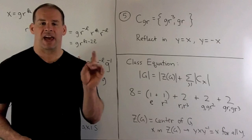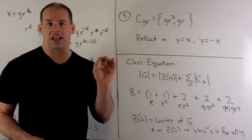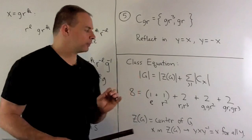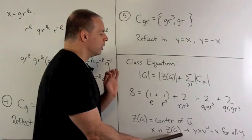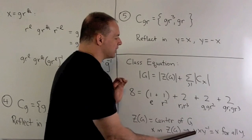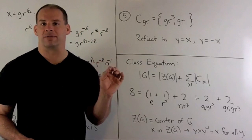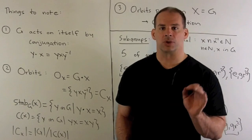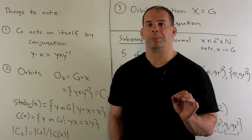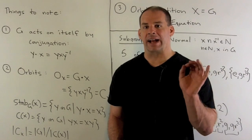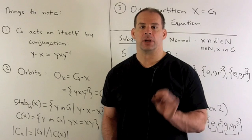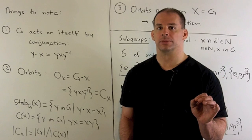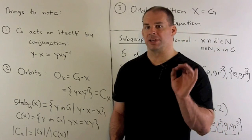The thing to note: the center is just going to be the union of the singleton classes. If you have only one element in your class, that means that element belongs to the center. To see that, if X is in your center and we consider conjugation on X, since X is in the center we can pass elements through it, so the Y and Y inverse go away. The only thing you're ever going to get is X itself. Let's recall where the class equation comes from: we have a group G, and we let it act on itself by conjugation.